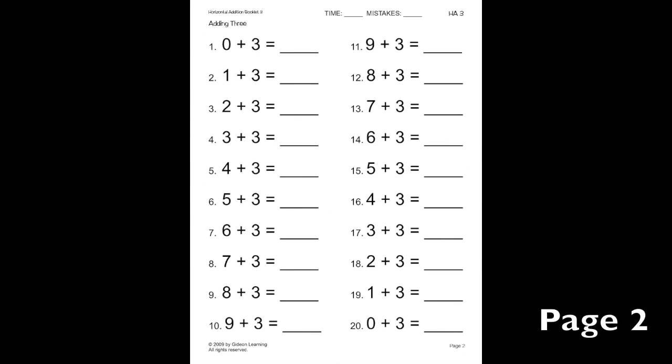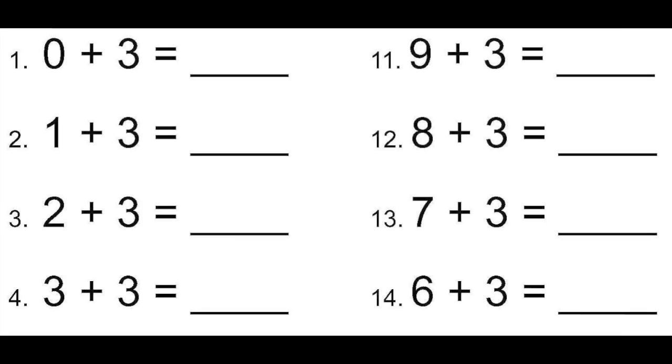Let's practice adding 3 on the drill page. This first problem we have 0 plus 3. What is 3 numbers after 0? 3. So 0 plus 3 is 3. Now we have 1 plus 3. 3 numbers after 1 is 4. So then 2 plus 3 is 5. On this page it goes in order, so that will help you learn your addition facts and memorize them.